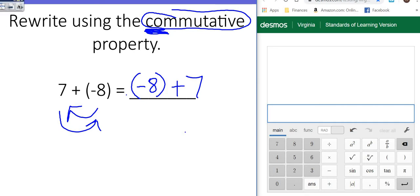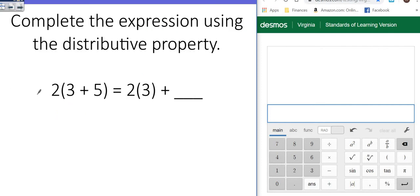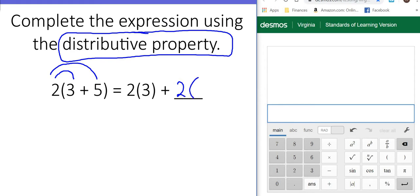All right, let's look at the next one. It says complete the expression using the distributive property, which we have told you is rainbow farts. So this outside number spreads here, and it spreads here. So 2 times 3 is already written. So next we're going to put 2 times 5.